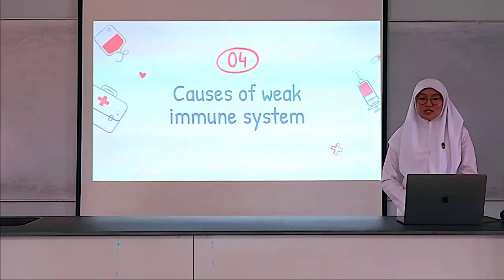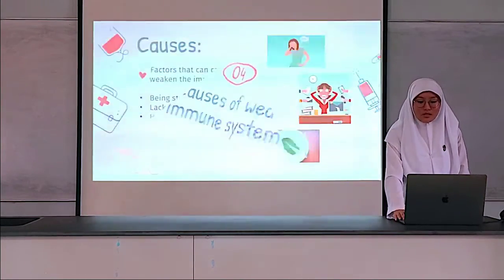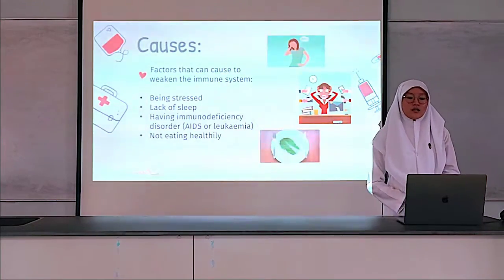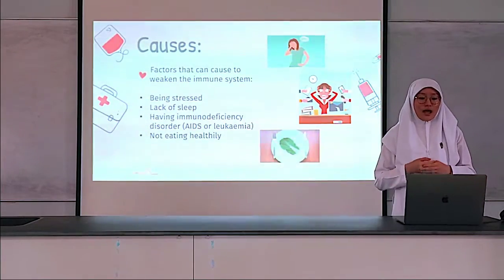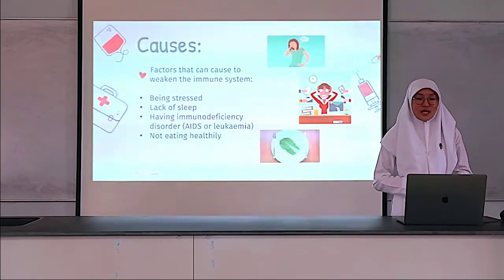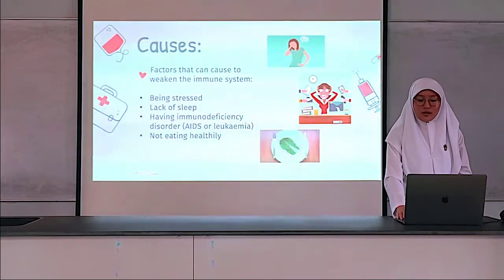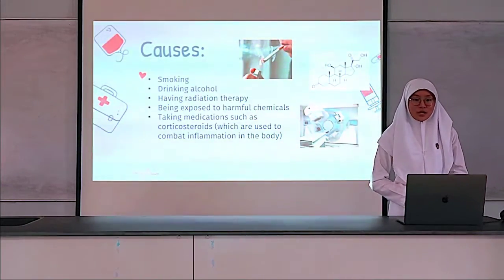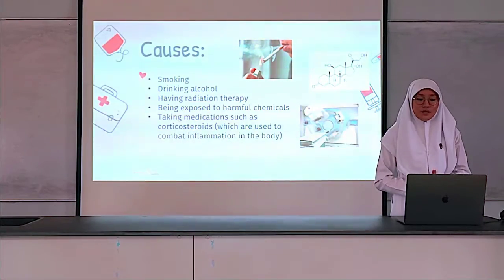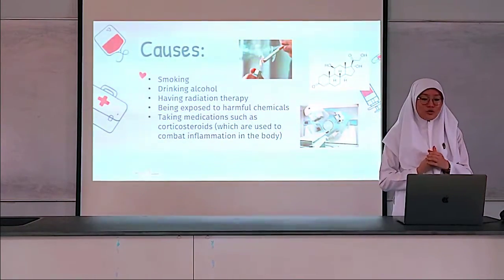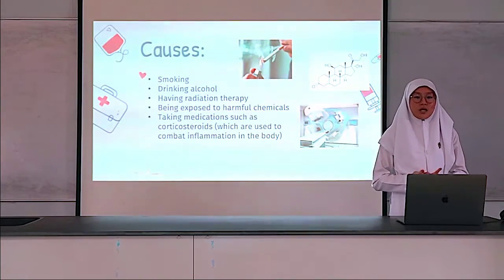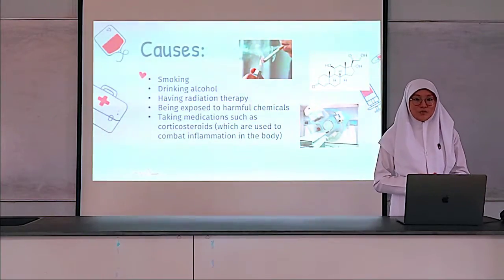Next, we will look at the causes of a weak immune system. Several factors can cause a weak immune system: being stressed, lack of sleep, having immunodeficiency disorders such as AIDS or leukemia, not eating healthily, smoking, drinking alcohol, having radiation therapy, being exposed to harmful chemicals, and taking medications such as corticosteroids, which are often used to combat inflammation in the body — for example, by patients who have suffered from SLE.